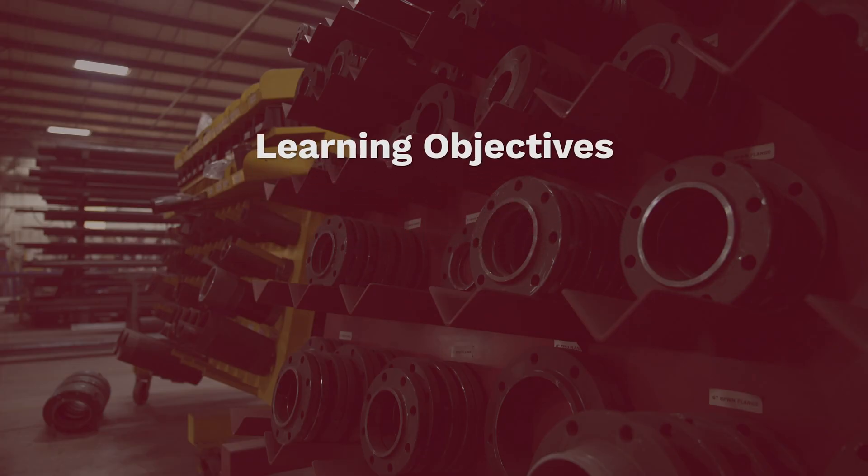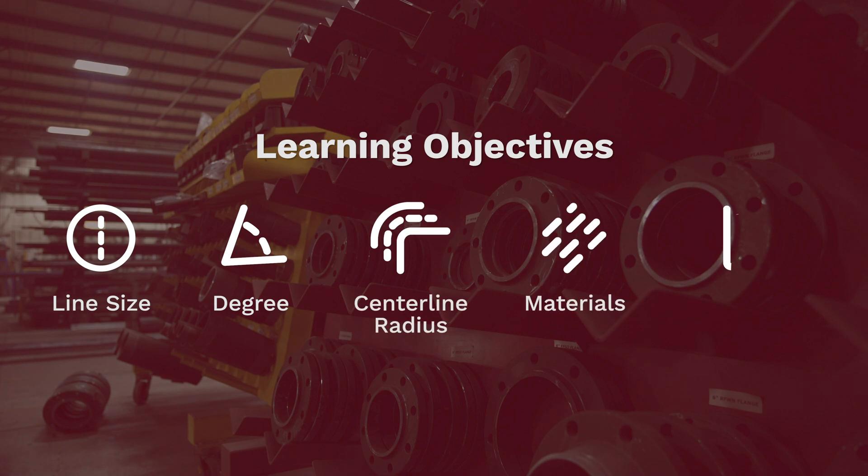By the end you'll be able to identify the line size, whether it's pipe or tubing, by the diameter and thickness, the degree of your elbow, the centerline radius, and the tangential points.